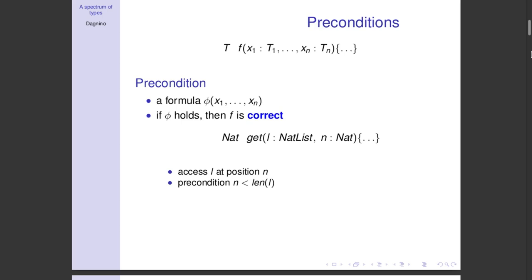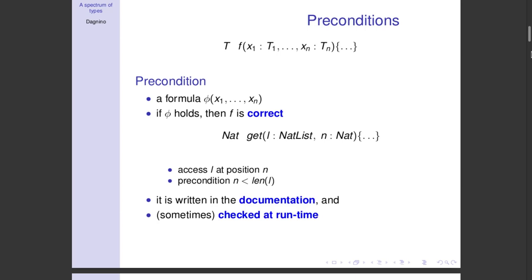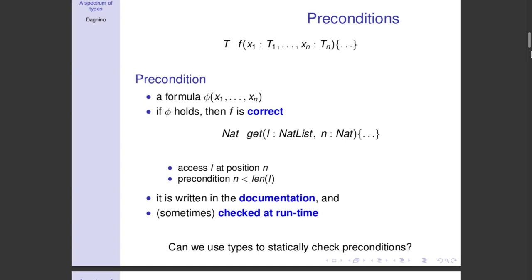If the precondition holds, we are guaranteed that the function invocation will be correct. If the precondition does not hold, we don't know what happens — in the best case we will get an exception, in the worst case, in a language like C, we can even access memory without knowing what would happen. The problem with preconditions is that they are informal — usually written in documentation, so programmers ignore them, and in the best case they are checked at runtime. There is no static guarantee that the preconditions are respected. A natural question is: can we statically guarantee that preconditions hold, and better, can we use types to do this?